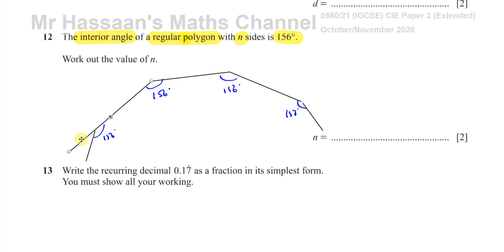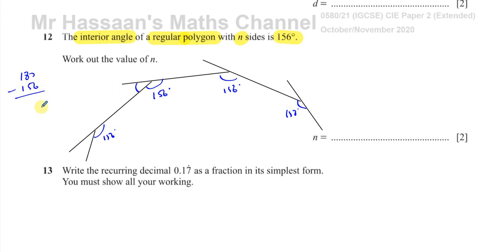What I'm going to do is extend each of these sides so that we produce what are called the exterior angles. I'll extend this side as well, just to show you the exterior angles on all of these corners. Each of these exterior angles are the same because it's a regular polygon — all the interior angles are the same and all the exterior angles are the same as each other. At each corner, the exterior angle plus the interior angle add up to 180 degrees. So this exterior angle is 180 take away 156, which gives us 24 degrees.